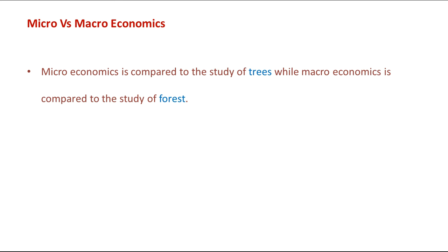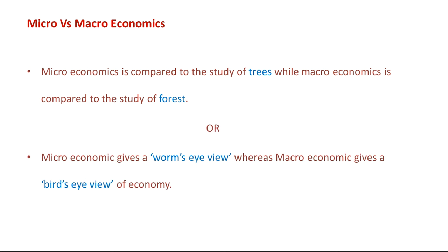Now, what is the difference between micro and macroeconomics? Microeconomics is compared to the study of trees while macroeconomics is compared to the study of a forest. We can also say that microeconomics gives a worm's eye view, whereas macroeconomics gives a bird's eye view of the economy.